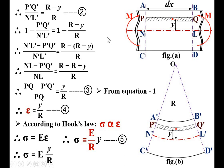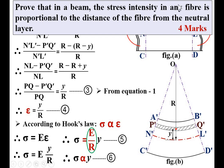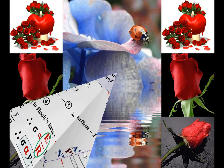Now look at Equation 5: sigma = (E / R) × y. This proves that in a beam, the stress intensity in any fiber is proportional to its distance from the neutral layer. Since E / R is always constant for a particular beam, sigma is directly proportional to y — Equation 6. The stress intensity sigma is proportional to the distance y of the fiber PQ from the neutral layer. Hence it is proved. This is the final desired proof.